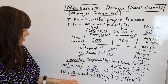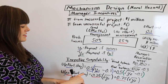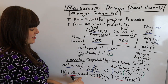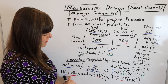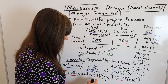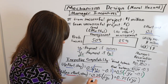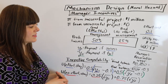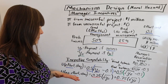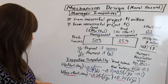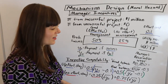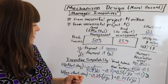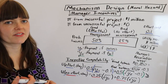For the incentive compatibility constraint, the utility of putting forth effort and staying needs to be greater than or equal to the utility of not putting forth effort and staying. By not putting forth effort, the manager avoids the effort cost, but faces a higher chance of failure and lower chance of success — the probabilities change accordingly. We as the board of directors need to set payments so that the effort side is greater than or equal to the no-effort side. That's all that's required for the incentive compatibility constraint.